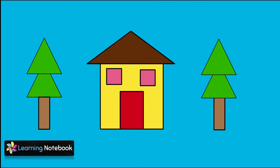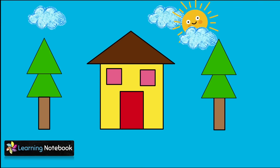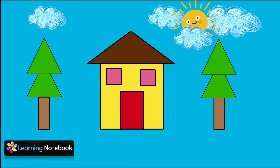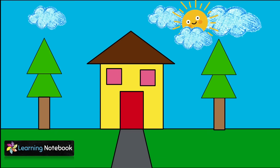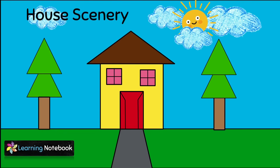We will make two trees with the help of green triangles and brown rectangles. Next, cut out a few cloud shapes and a big circle to form the sun. Cut out a big green rectangle to form the ground. After this, cut out a gray trapezium to form the path to the house. Using a black marker, complete the windows and doors.